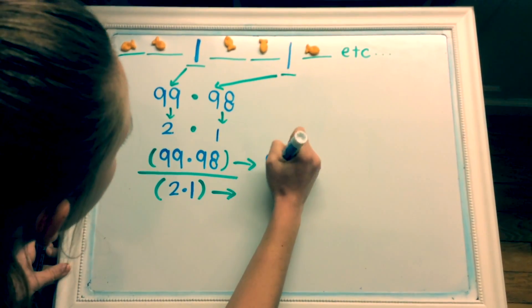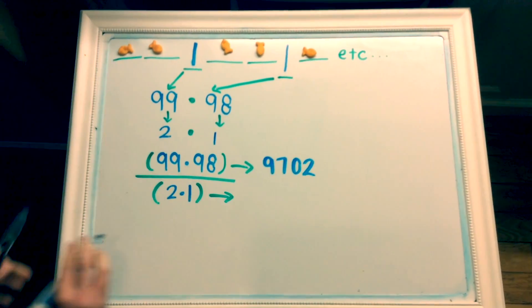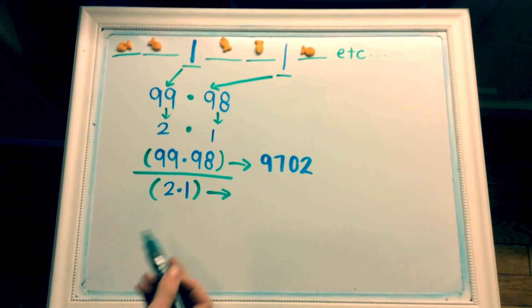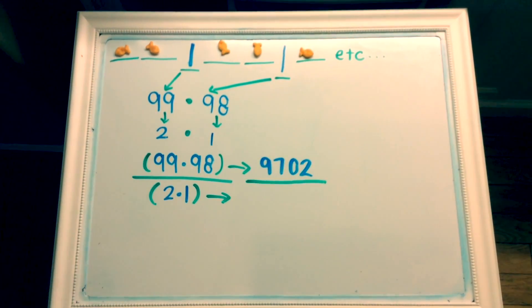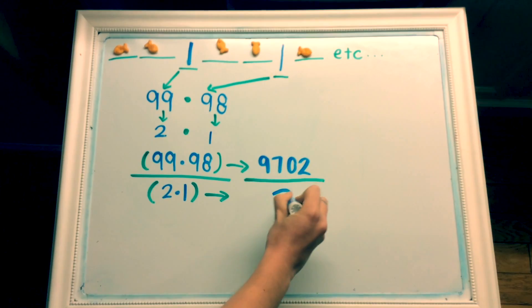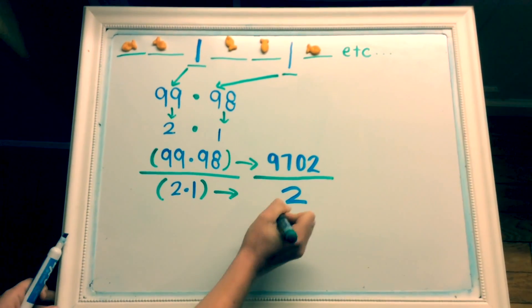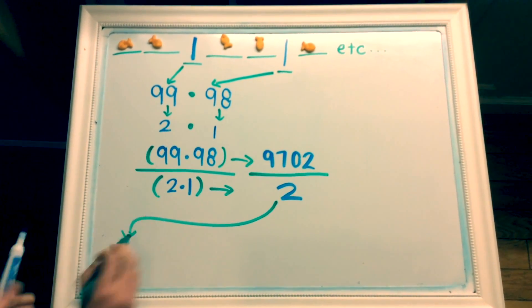Let's simplify. 99 times 98 equals 9,702. 2 times 1 equals 2. So, 9,702 divided by 2 equals 4,851.